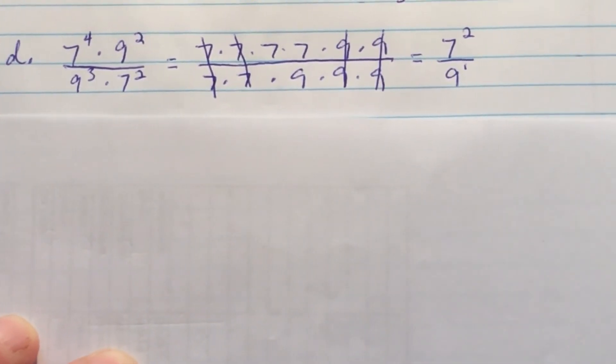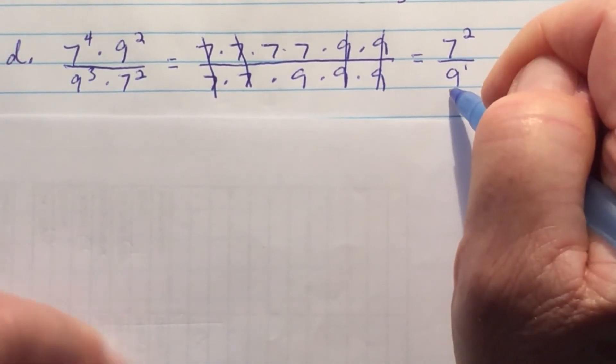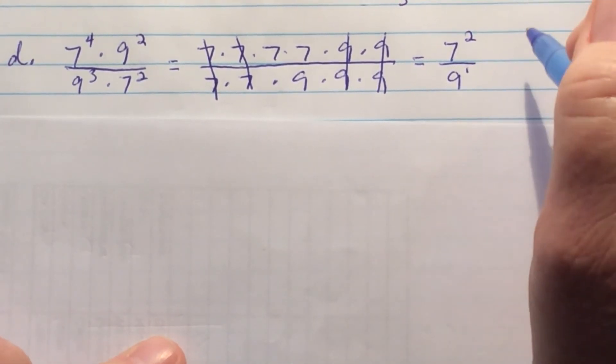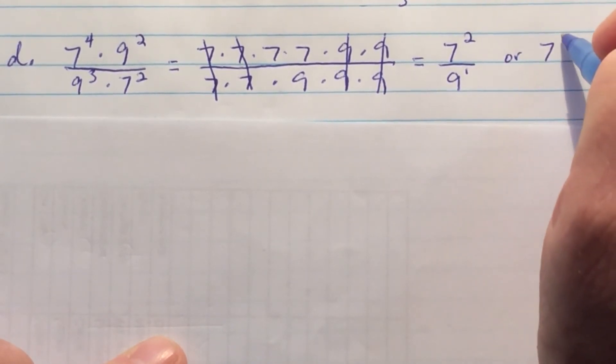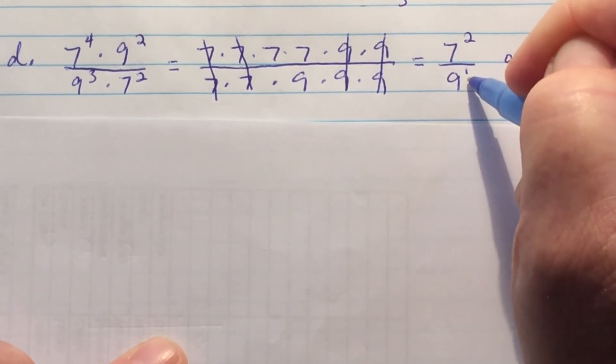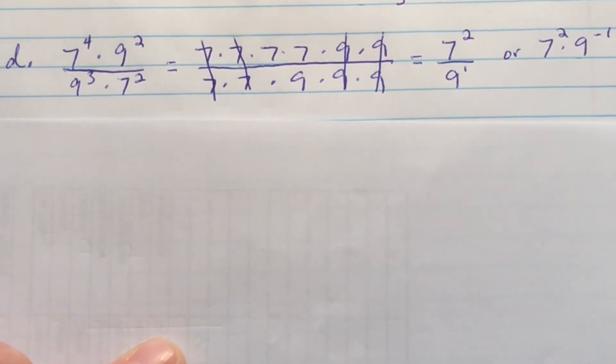So that can be written just like that: 7 squared divided by 9 to the first power, or just 9. You can also write this as 7 squared times 9 to the negative 1 power, since dividing by a number is a negative exponent.